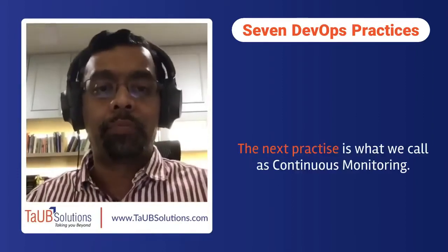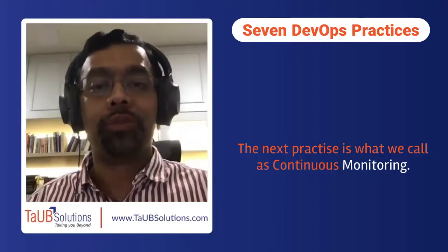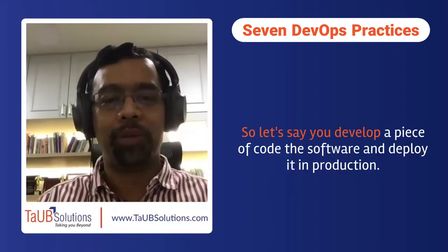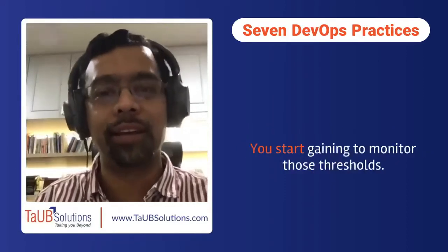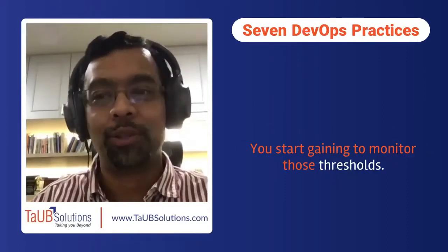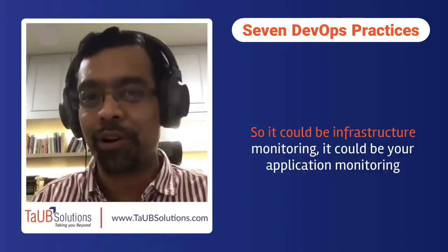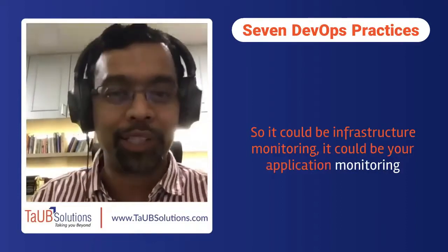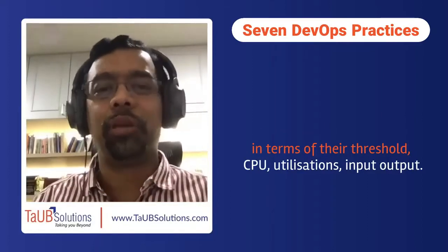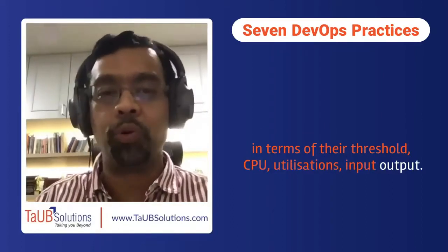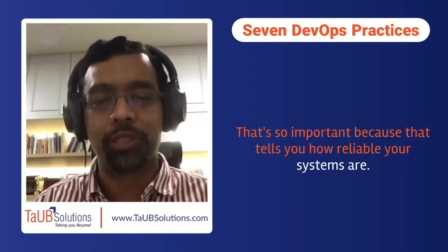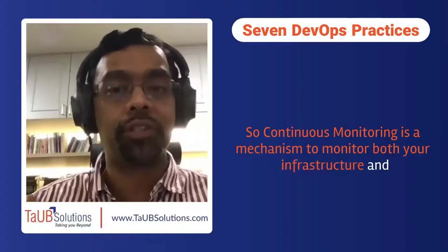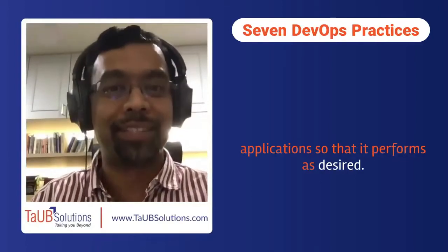The next practice is continuous monitoring. Once you develop and deploy software into production, you begin monitoring thresholds — infrastructure monitoring, application monitoring in terms of CPU utilization, input-output, and so on. This is important because it tells you how reliable your systems are. Continuous monitoring is a mechanism to monitor both your infrastructure and applications so that they perform as desired.